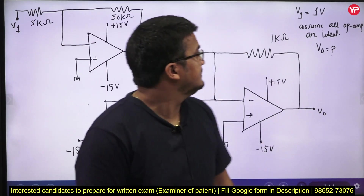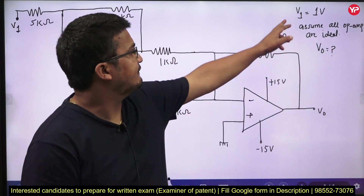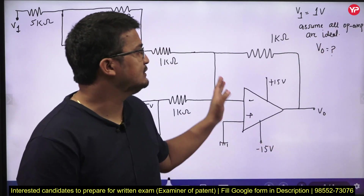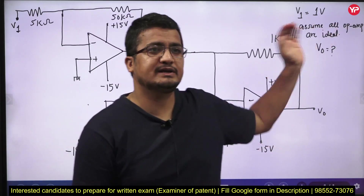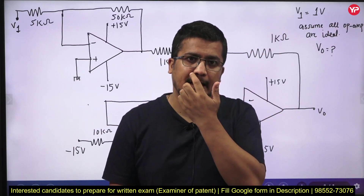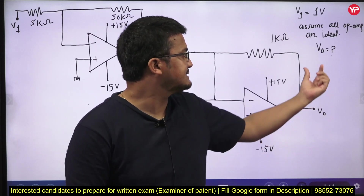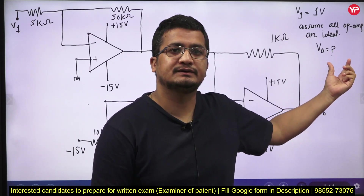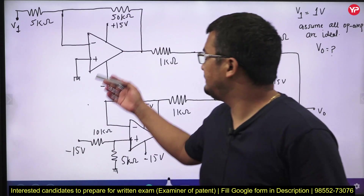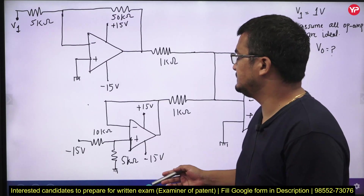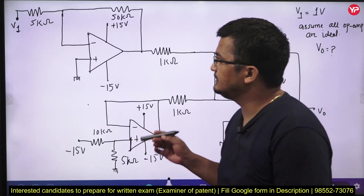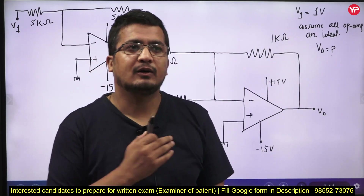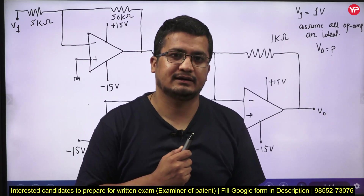The question states: if V1 is equal to 1 volt and you need to assume all the operational amplifiers are ideal, then under that constraint you need to calculate V0. You can see this is a bit of a big circuit, but the question is not as complex as the circuit complexity might suggest.